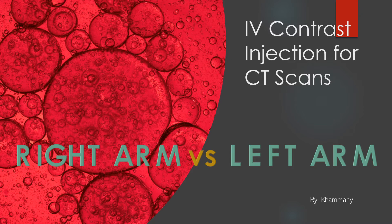We give contrast from peripheral IVs mostly, and I know it doesn't seem like it matters, but it really matters if you inject through the patient's right arm or the left arm because the blood flow is a little bit different — especially for cardiac scans, CTAs of the head and neck, pulmonary arteries, and things in the chest like your aortic arch.